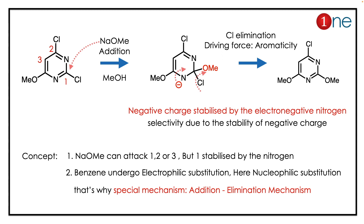The driving force for chlorine elimination and double bond formation is aromaticity. Finally, you get a stable methoxy product. The substitution happened at the third position. The key concept here is that sodium methoxide can attack at positions 1, 2, or 3, but the product is influenced by the electronegative nitrogen.